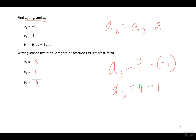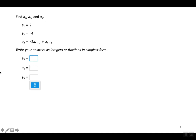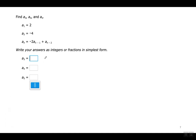Tienen que poner el signo correcto si no se lo van a coger mal. Let me go to the next one. This one they're changing it up a little bit more — slightly more complicated. My first term is 2, my second term is negative four. I'm going to find A3, A4, and A5.